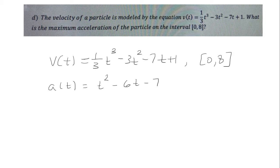Because we want to find the maximum acceleration, we need to also take another derivative to get the critical point that will make our acceleration the maximum. So take the derivative of t squared minus 6t minus 7, set it equal to 0. We end up getting t equals 3.